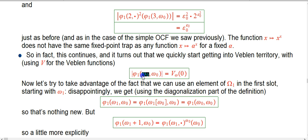It turns out — not going to do the details — but if you now start putting omega naught into the control argument, this is the first time we've taken advantage of the fact that we can use any infinite ordinal in the control argument here. It turns out that the height of that is the omega-Veblen function applied to zero. But that's not the full power of even the phi-1 function. The phi-1 function is able to use an omega-2 element in the control slot to control its operation on omega-1 elements.